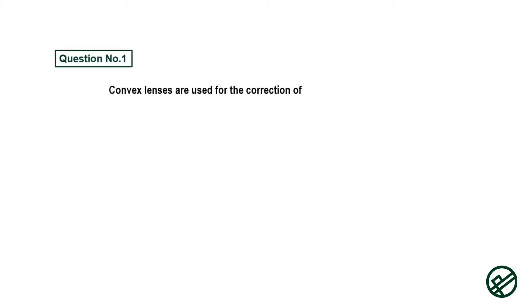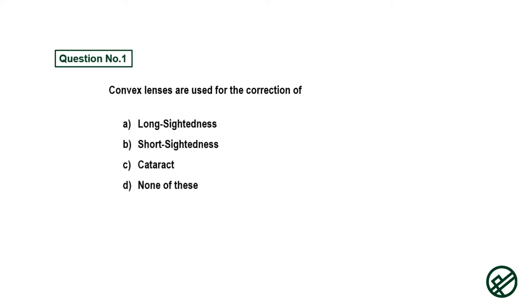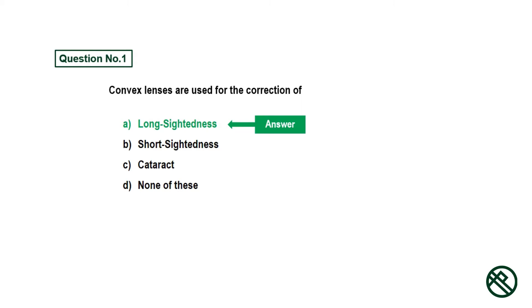Physics MCQs. Question number one: Convex lenses are used for the correction of — option A: long sightedness, option B: short sightedness, option C: cataract, option D: none of these. Answer is option A: long sightedness.